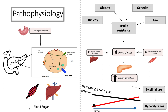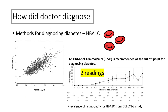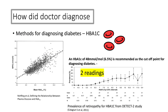The net effect is increased circulating blood glucose levels. As a result, the pancreas initially tries to compensate by secreting higher amounts of insulin. However, eventually the pancreas becomes exhausted. You get gradual beta cell failure, which leads to hyperglycaemia. The GP diagnosed Ashish using HbA1c.